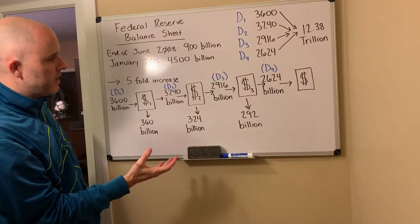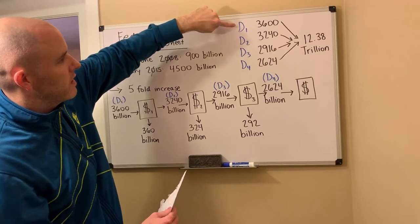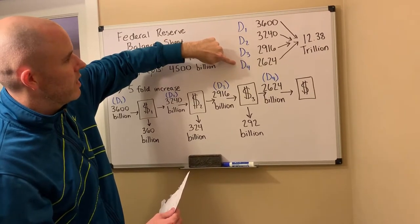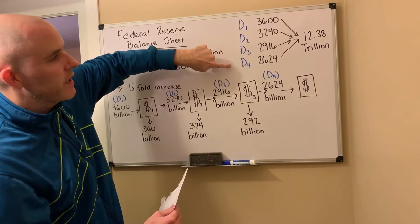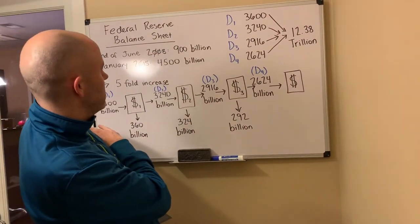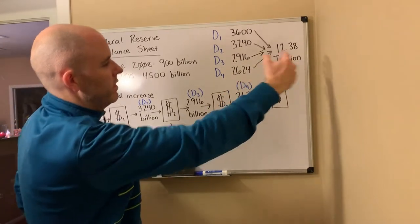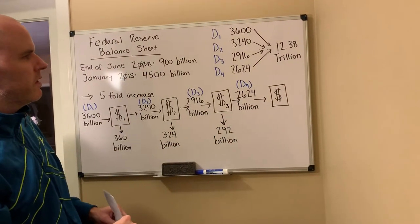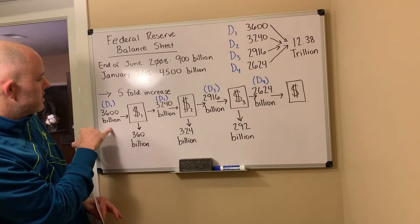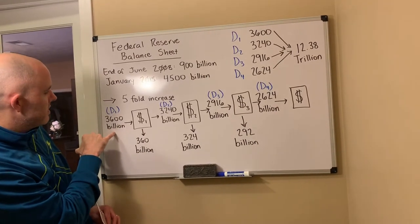Through the money multiplier, these are the amounts of deposits that can be made: $3,600, $3,240, $2,916, and $2,624 billion — all created out of thin air, for a total of $12.38 trillion through just four deposit cycles. And if you follow this to its logical end, the final number is that multiplied by almost 10, which is the maximum amount of credit that can be created from this initial number.